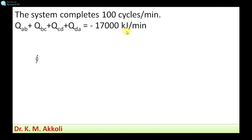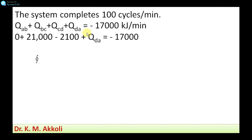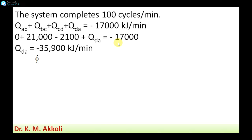The system completes 100 cycles per minute and the sum of all heat transfers is minus 170 kilojoules per cycle, so for 100 cycles that is minus 17,000 kilojoules per minute. The summation of heat transfers: Q_AB plus Q_BC plus Q_CD plus Q_DA equals minus 17,000. Q_AB is zero, Q_BC is 21,000, Q_CD is minus 2100, so solving for Q_DA gives minus 35,900 kilojoules per minute.